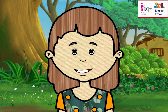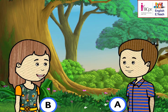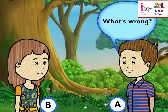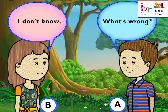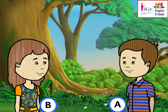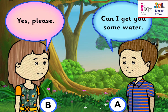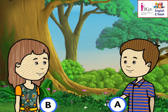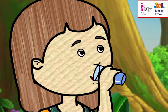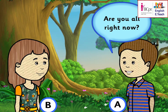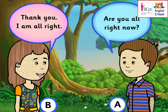Sachin is A and I am B. A: What's wrong? B: I don't know. A: Can I get you some water? B: Yes, please. A: Are you alright now? B: Thank you. I am alright.